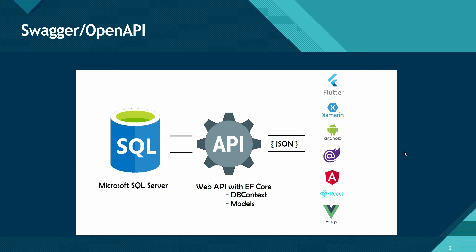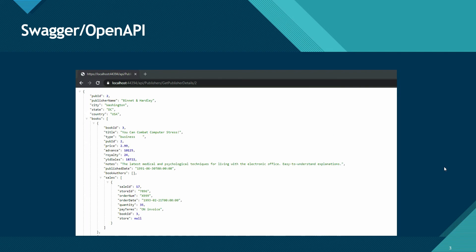When we started the project, we decided to use Web API because most technologies can handle JSON as input and output, so we can have multiple front-end developers in Flutter, Xamarin, Android, Blazor — you name it. But I can't just give my API to these front-end developers without documentation. I'll have to tell them what API to call, what kind of method it is — get, post, put — what parameters it takes, and what kind of response they should be expecting.